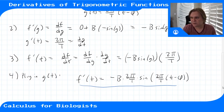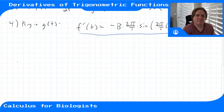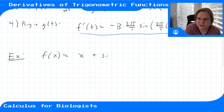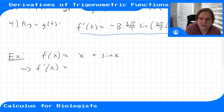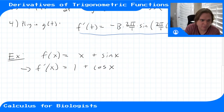That's how you compute the derivative of a general trigonometric function. Another example: if we have x plus sine of x, we just use the sum rule. The derivative of x is 1, and the derivative of sine is cosine of x. Nothing unusual happens when we combine trigonometry with normal functions.